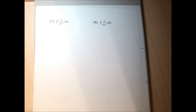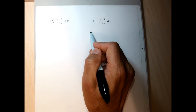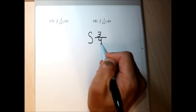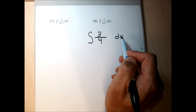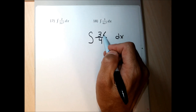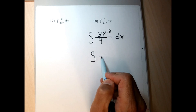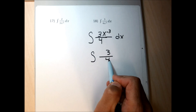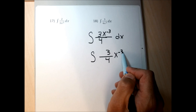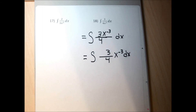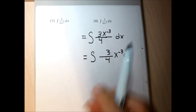Problem 18 needs to be rewritten carefully. That x in the denominator needs to move up to the numerator with a negative exponent — but the 4 in the denominator stays there. Only the x moves up. So this becomes the integral of x to the negative 3 over 4, which I can write as 1/4 times x to the negative 3 dx. Now I can add 1 to the exponent and divide by the new exponent.